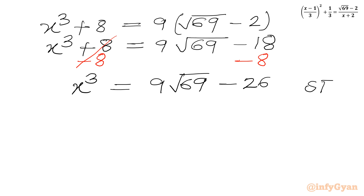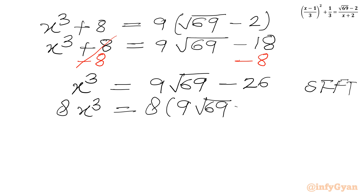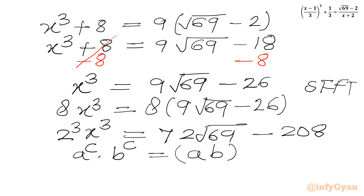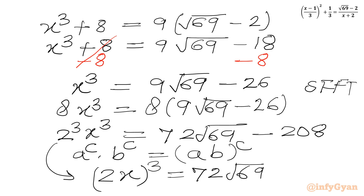Now we will use Simon's Favorite Factoring Trick. We multiply both sides by 8: 8 times x³ equals 8 times (9 times the square root of 69 minus 26). Since 8 equals 2³, the left-hand side becomes (2x)³. The right-hand side becomes 72 times the square root of 69 minus 208.